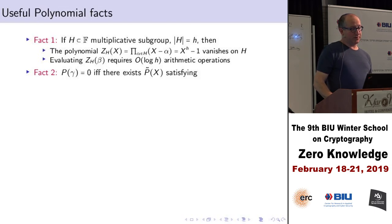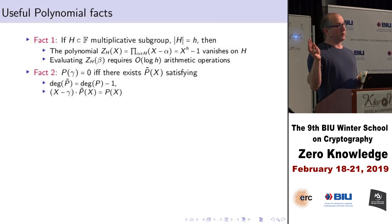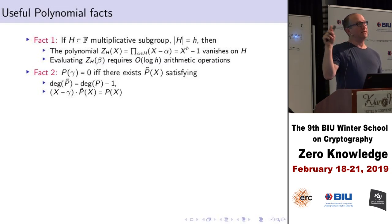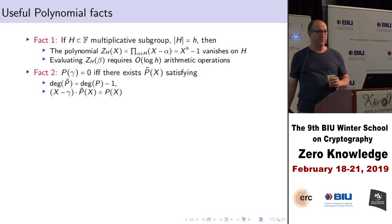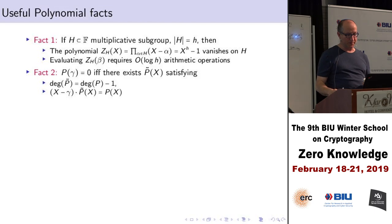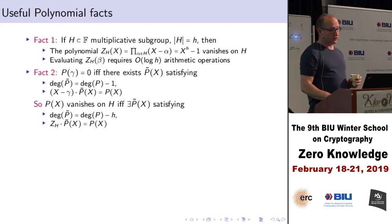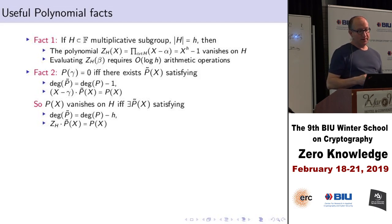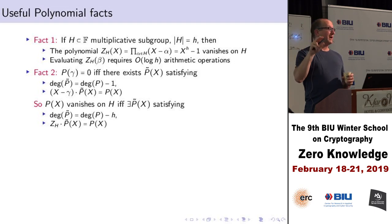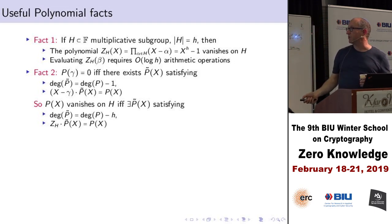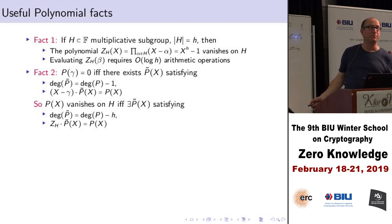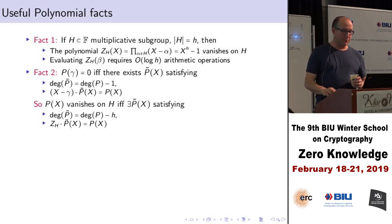Fact 2: a polynomial p vanishes on the point γ if and only if there exists some other polynomial p̃ of degree exactly one less than p, such that p(x) = (x − γ) · p̃(x). This is the basic fact that x minus a root divides the polynomial. Inductively, p(x) vanishes on the entire subgroup H if and only if there is an auxiliary polynomial p̃ of degree equal to deg(p) minus the size of H, such that p(x) = Z_H(x) · p̃(x).